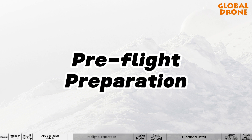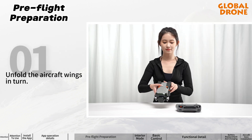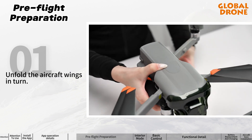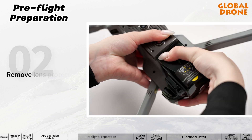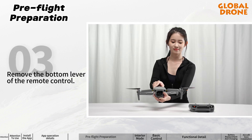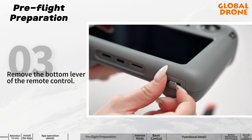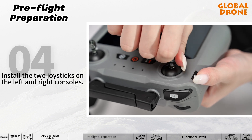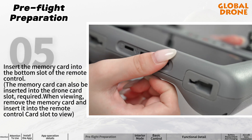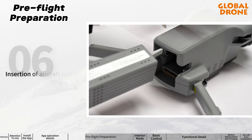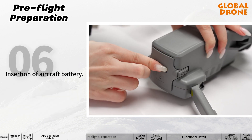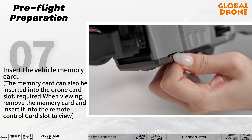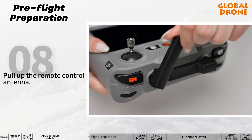Pre-flight preparation: unfold the aircraft wings in turn. Remove the lens protector and the bottom lever of the remote control. Install the two joysticks on the left and right consoles, then insert the memory card into the bottom slot of the remote control. Insert the aircraft batteries and the vehicle memory card, then pull up the remote control antenna.